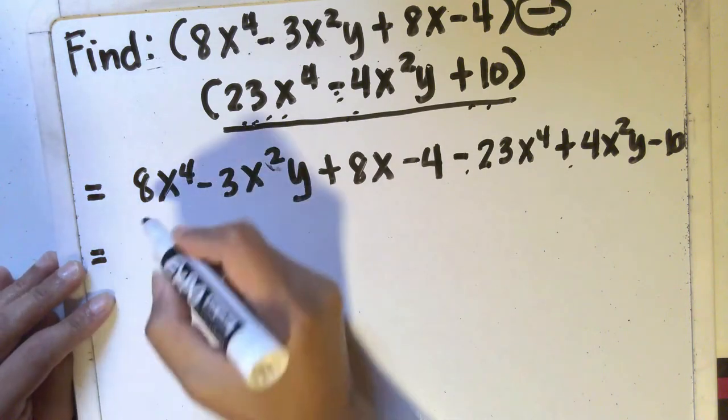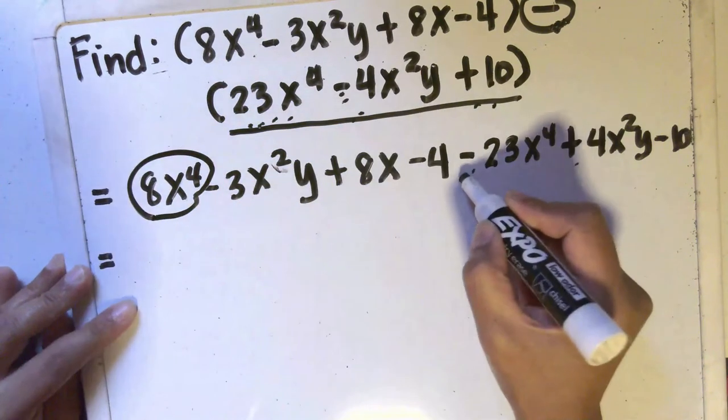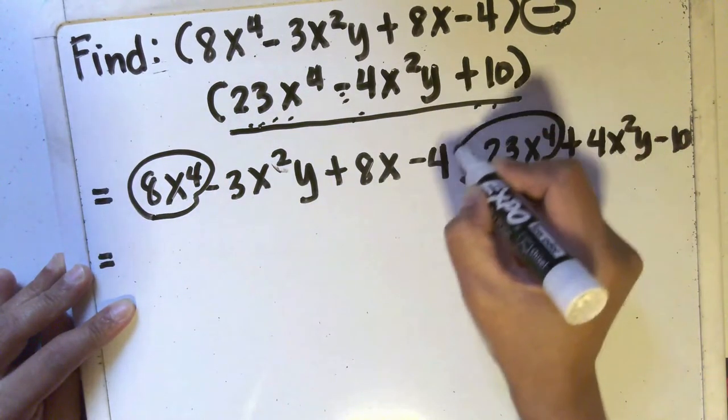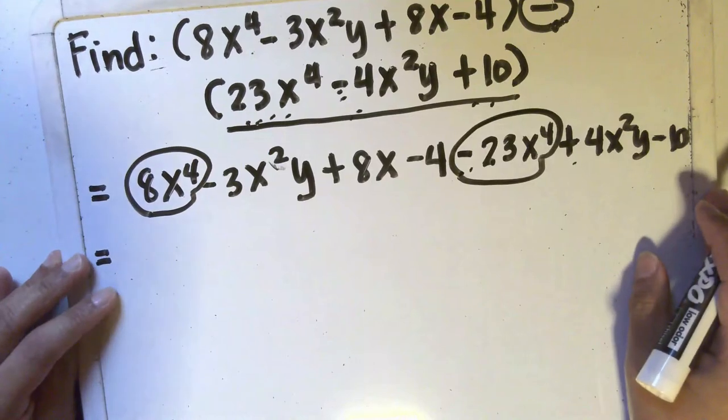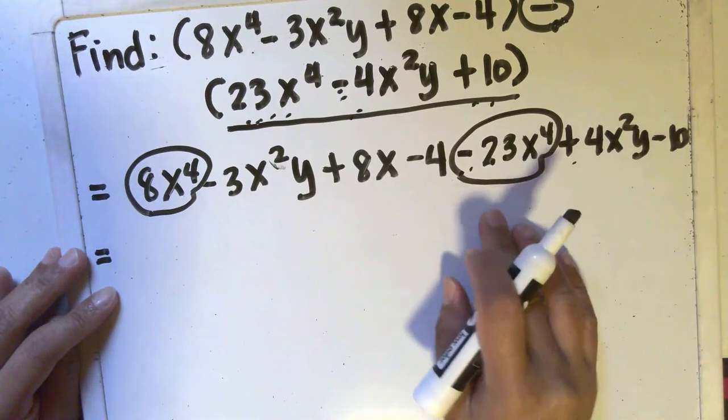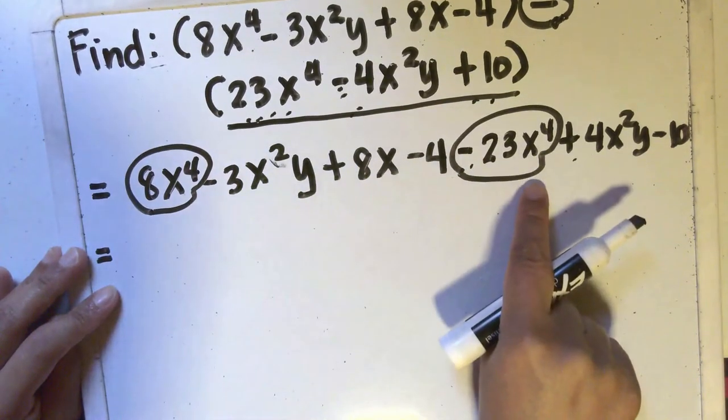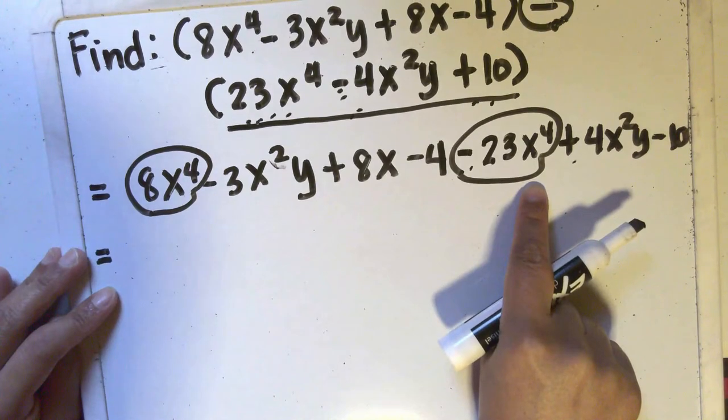So I can say that 8x to the 4th and negative 23x to the 4th are like terms. Why? Because they both have x to the 4th and nothing else.